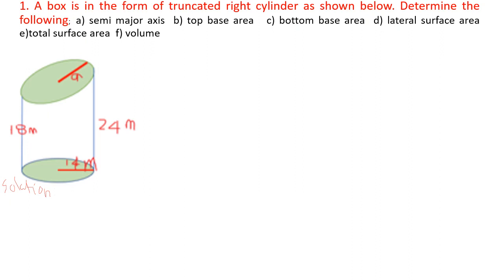Semi-minor axis: A squared equals R squared plus ((H minus 1) over 2) squared equals 14 squared. Plus 24 minus 18, solving for the second term.